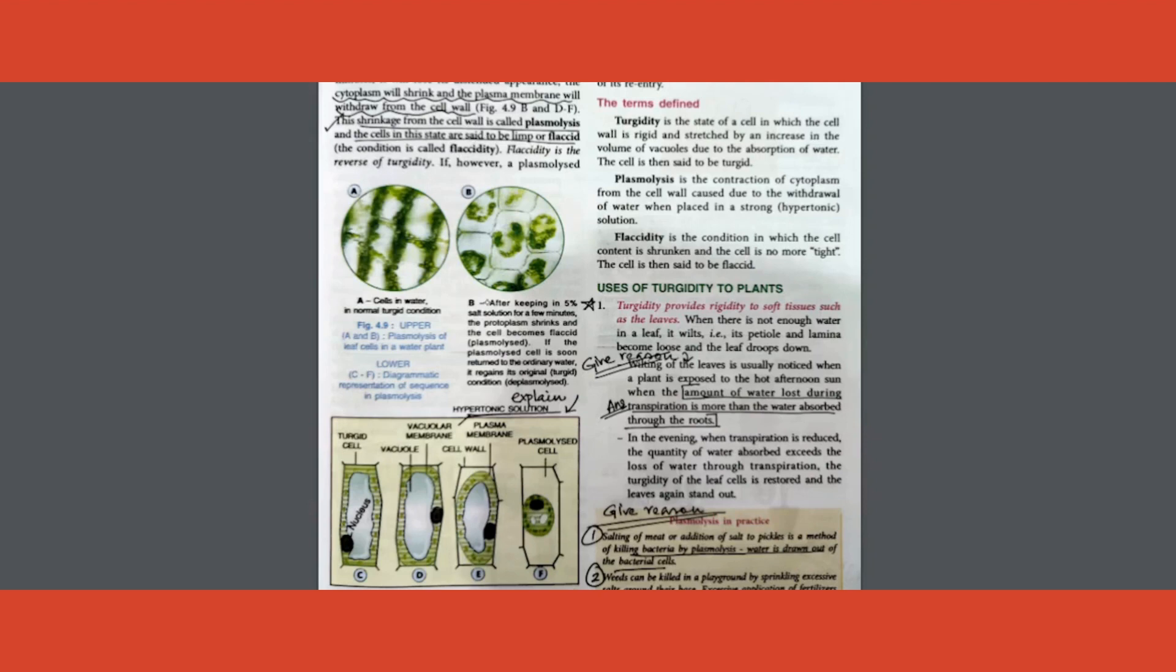One more question again. When plasmolysis goes on, then you call the cell to be flaccid. So what is flaccidity? It's kind of opposite to turgidity, wherein cell is placed in a hypertonic solution. The cell contents and the plasma membrane is detached from the cell wall - this condition is called plasmolysis and the cell is called to be flaccid. How can you reverse plasmolysis? It can be reversed just by placing the cell back in a hypotonic solution. Please mark that. You have to learn these three definitions.